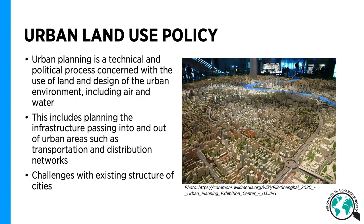Urban land-use policy is a process that can be used to steer the development of the urban form towards an environment that creates conditions for better urban air quality. Urban planning itself is a technical and political process concerned with the use of land and design of the urban environment, including the use of air, water, and other natural resources. Planning needs to take into account infrastructure passing into and out of urban areas, such as transportation and distribution networks. Other incentives include encouraging people to live closer to where they work, developing cost-effective and convenient mass transit networks, creating economic activities outside of megacities to reduce migration incentives, and strategically locating industries to improve air quality. However, there are challenges with existing structural cities and how much of this can be changed.